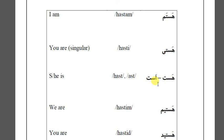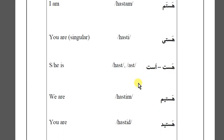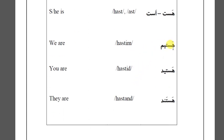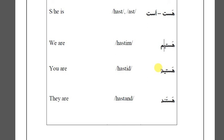The next one is hast — or ast. There is no present verbal ending here, so it is just for 'she' or 'he': hast. The next one is hastim — with -im at the end. The personal verbal ending -im gives us hastim, meaning 'we are.'